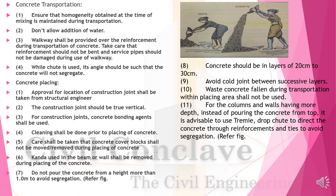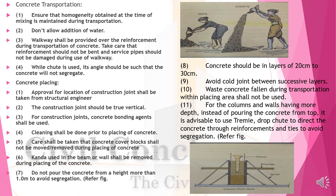Concreting should be placed in layers of 20 to 30 cm. Avoid cold joints between successive layers. Waste concrete fallen during transportation within the placing area shall not be used. For columns and walls having more depth, instead of pouring from the top it is advisable to use a tremie or drop chute.